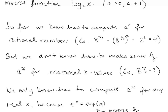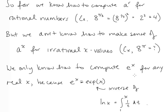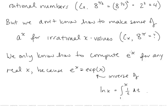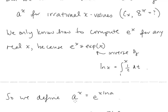We don't have a way to do that yet. We only know how to compute e to the x for any real x, because e to the x is exp of x, and exp of x we define to be the inverse of ln x. So the only exponential function that we've defined for the entire real line is e to the x. More generally, for base a where a is greater than 0 and not equal to 1, we're going to define a to the x to be e to the x ln a.